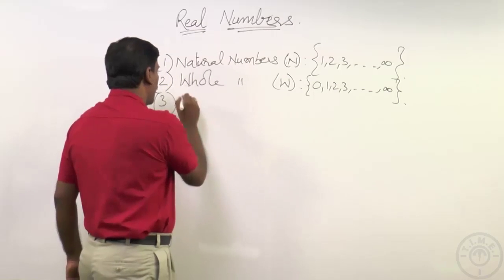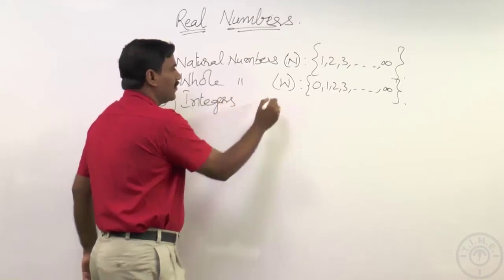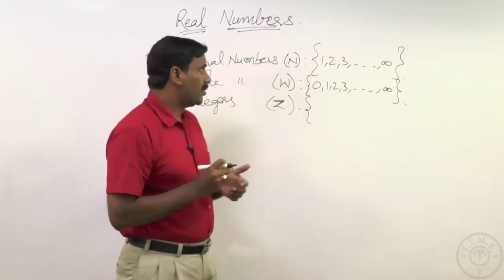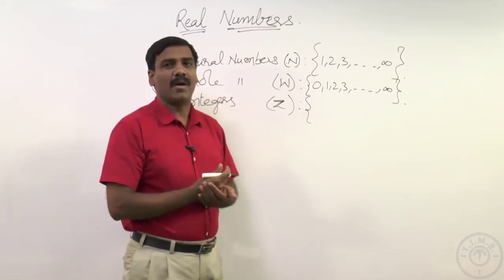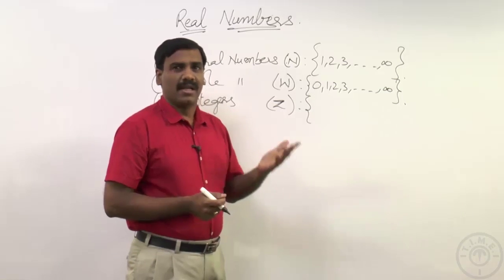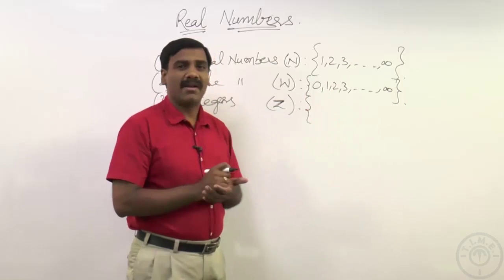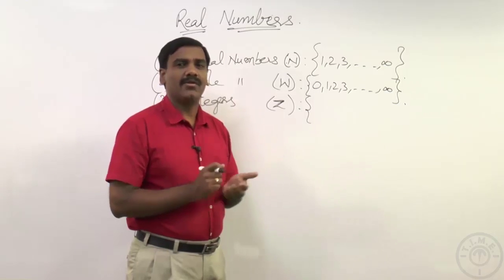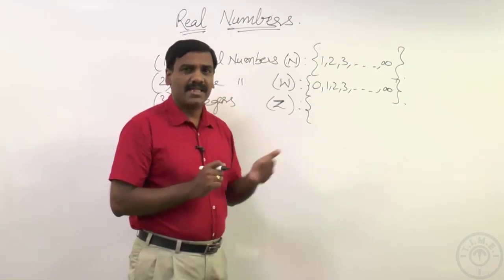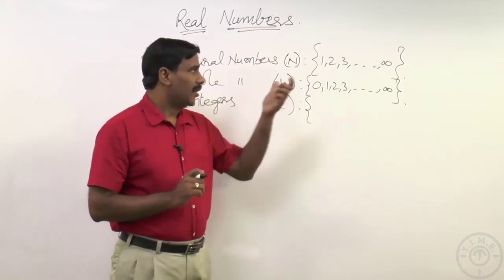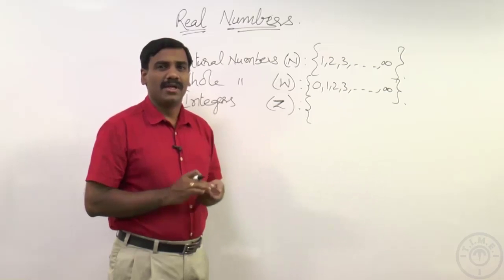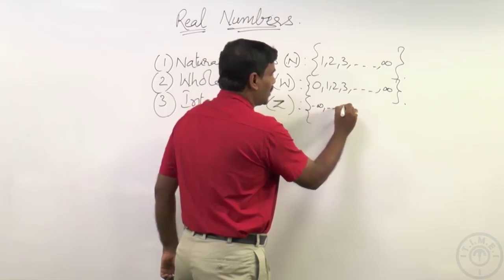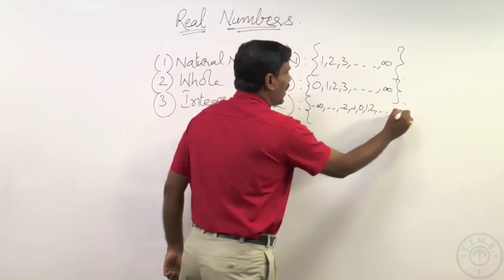Looking at the next classification: integers. Integers are represented by Z. If you are looking at whole numbers — zero, one, two, three, and so on up to infinity — and you consider the negatives of them: for zero the negative is zero, for one it is minus one, for two it is minus two, and so on. The set of whole numbers including their negatives is the set of integers. They start from minus infinity: minus two, minus one, zero, one, two, and so on up to infinity.